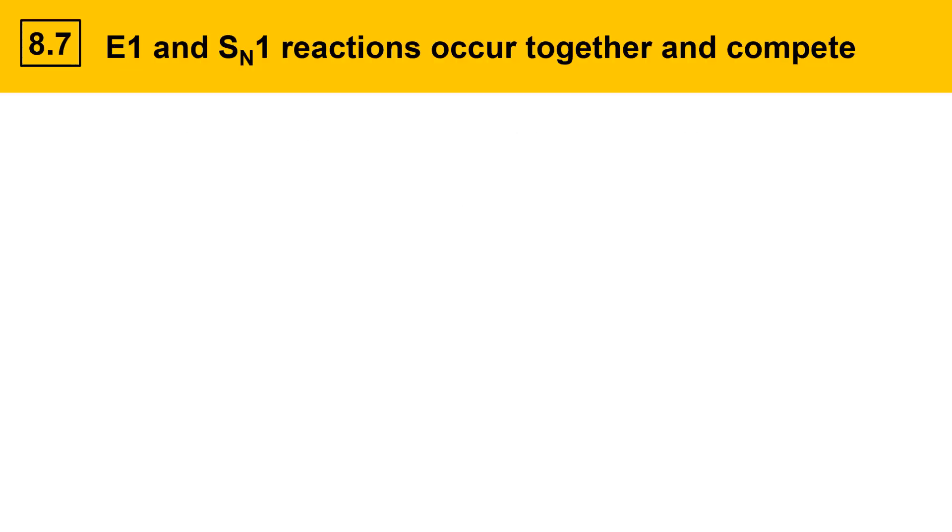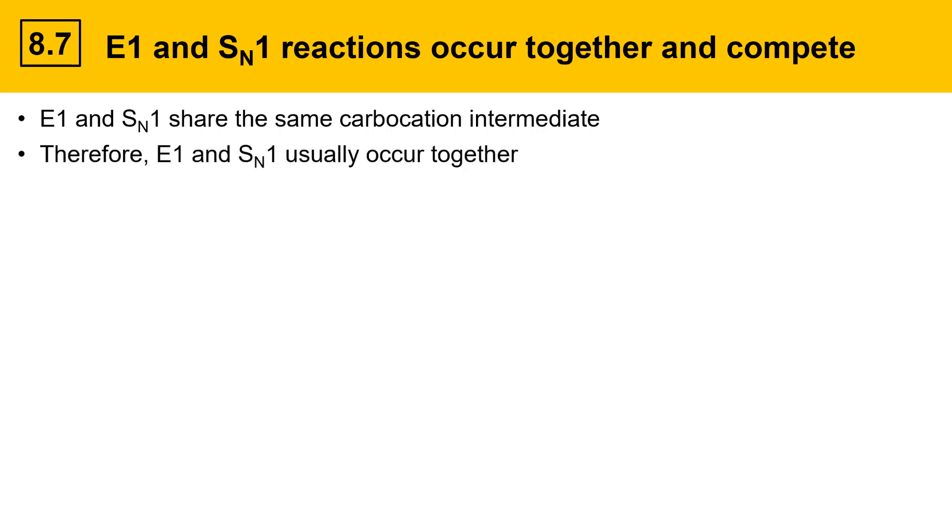The E1 and SN1 reaction mechanisms occur together and compete with each other. The reason is that they both share the same carbocation intermediate. Therefore, E1 and SN1 usually occur together in the same reaction pot.